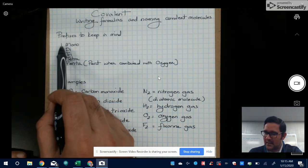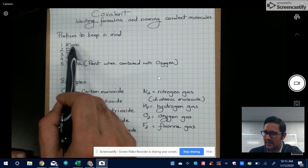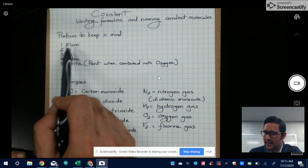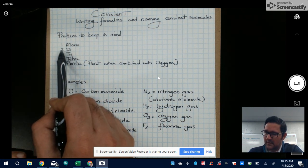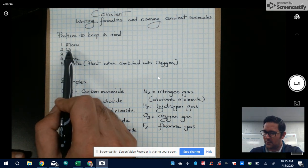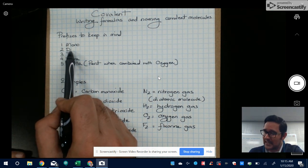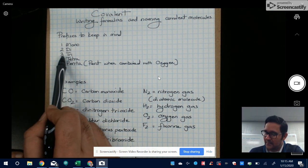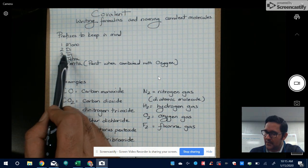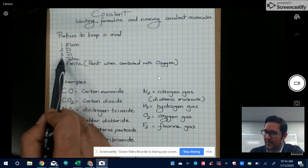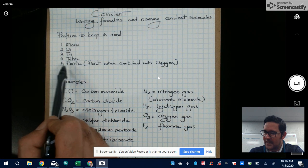If you see a single element, we're going to use the prefix mono. If you see two of those elements in the compound, we're going to use the prefix di. If you see three of the elements in a compound, we're going to use the prefix tri. Four is tetra, five is penta.